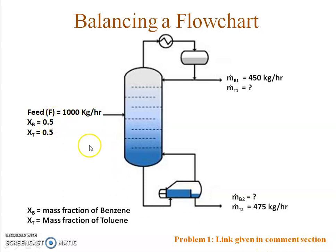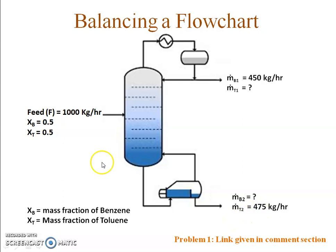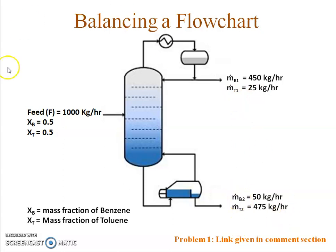This is the problem where 1000 kilograms of feed is going in — it contains benzene and toluene in equal ratios. It has been asked to calculate how much toluene is coming out in the distillate and how much benzene is coming out in the bottom product. You apply balance equations to find those amounts. Once you have applied the balance equations, calculated the unknowns, and written them in your flowchart, what you get is a balanced flowchart.